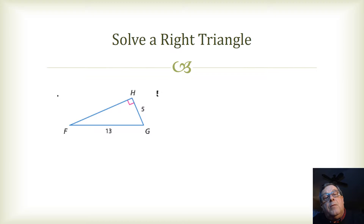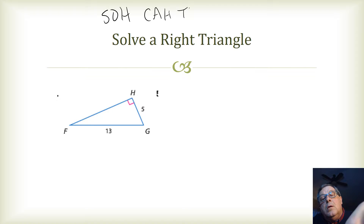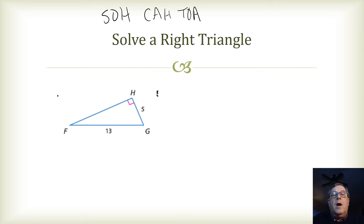I know I'm going to be using trigonometric ratios, so at the top of my paper I'm going to write SOHCAHTOA: sine equals opposite over hypotenuse, cosine equals adjacent over hypotenuse, tangent equals opposite over adjacent.